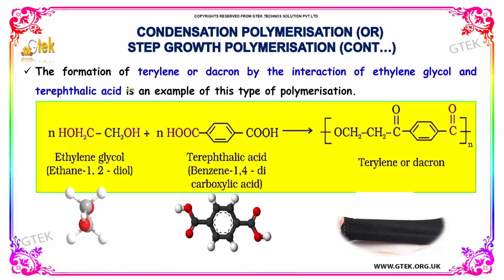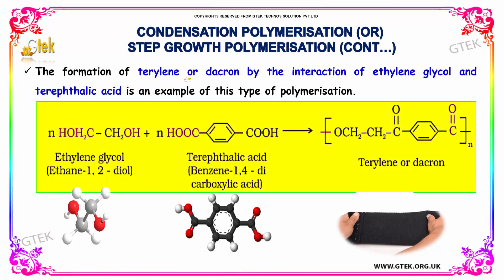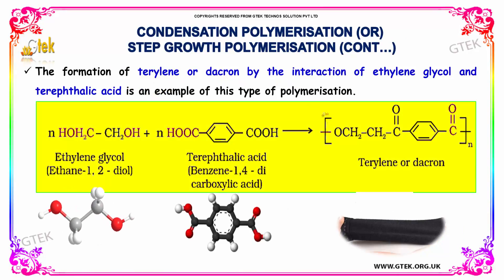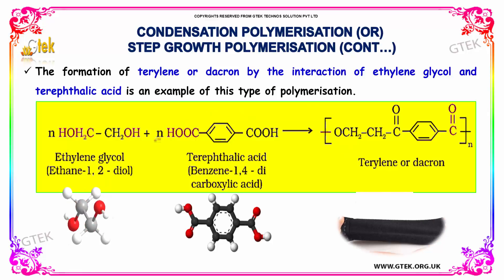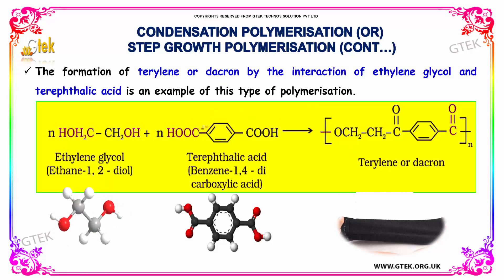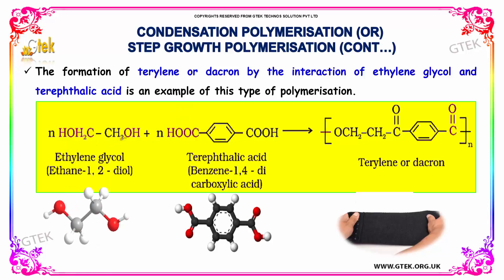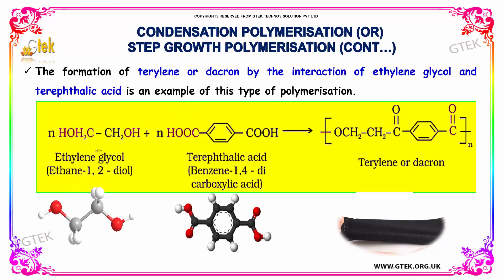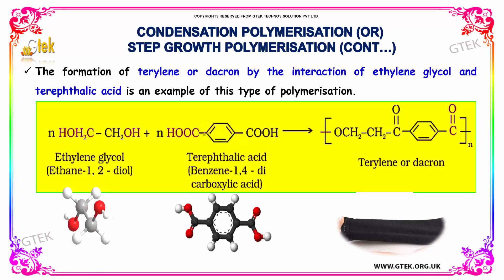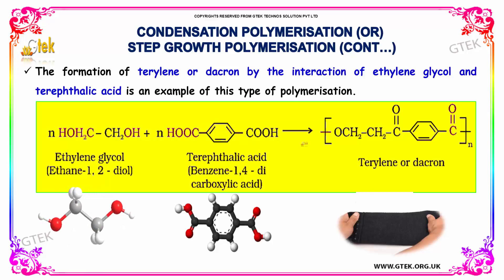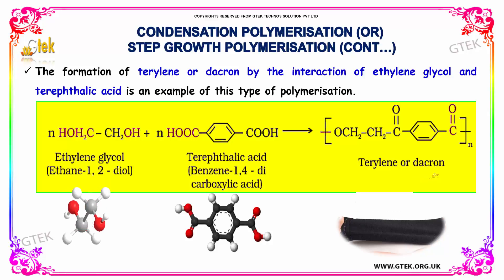The formation of Terylene or Dacron by the interaction of ethylene glycol and terephthalic acid is an example of this type of polymerization. N units of ethylene glycol react with N units of terephthalic acid and result in the formation of Terylene or Dacron.